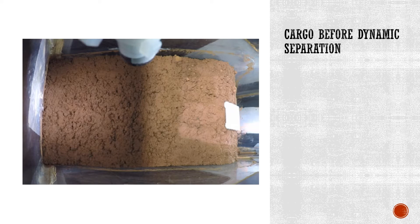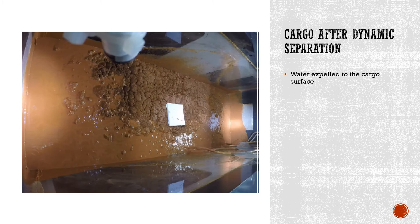In the next screen you can see if the cargo is fine enough and wet enough and experiences enough force from the vessel's motion at sea, the cargo undergoes a dynamic separation and it expels the water to the surface of the cargo as the cargo pile slumps.